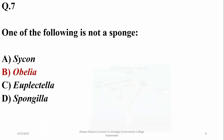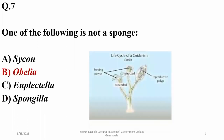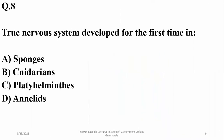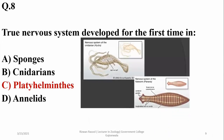Question seven: true nervous system developed for the first time in cnidarians, but the true nervous system was observed in platyhelminthes or flatworms for the first time, with cephalic and cerebral ganglia — a simplified brain.